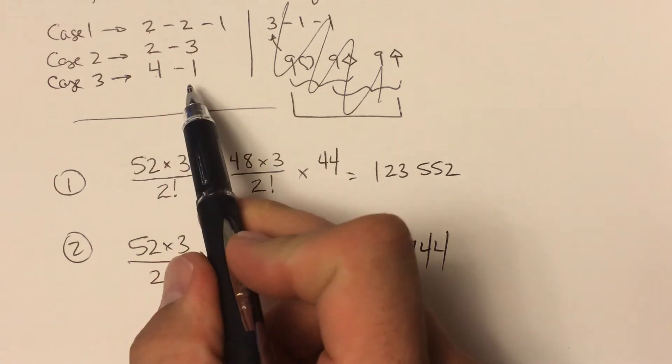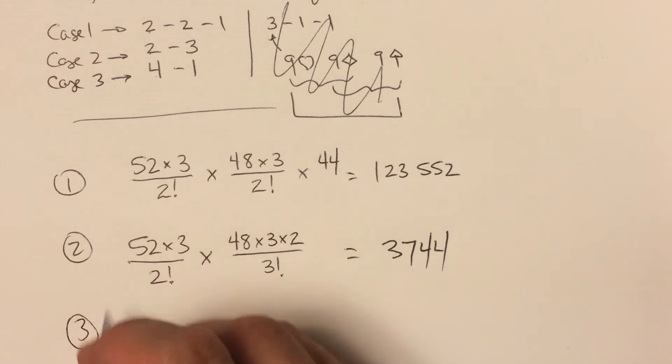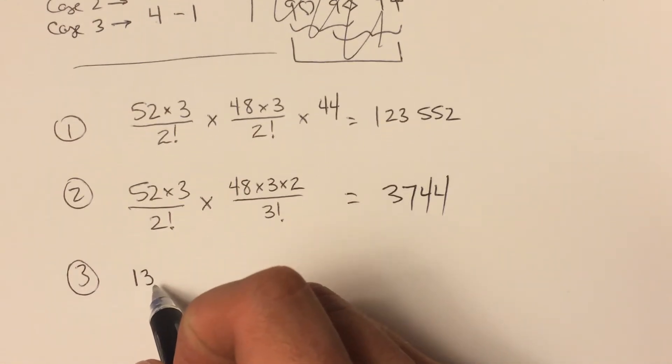Case three is that we have the poker hand would be a four of a kind: four of one value and one other value. This one is kind of the easiest. There are 13 different values—I'm going to do this one slightly differently. There are 13 different values in the deck, so let's say we pick sevens.